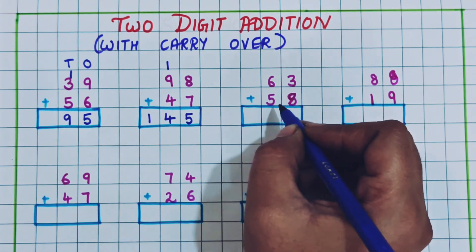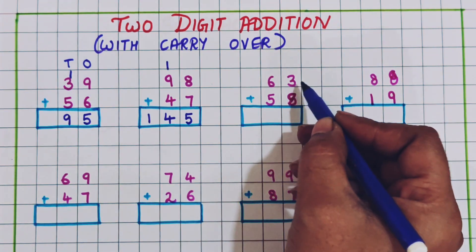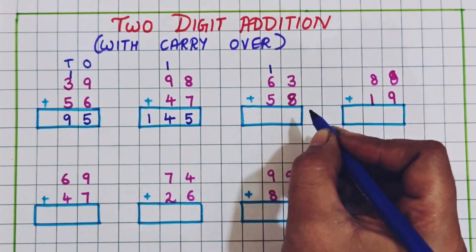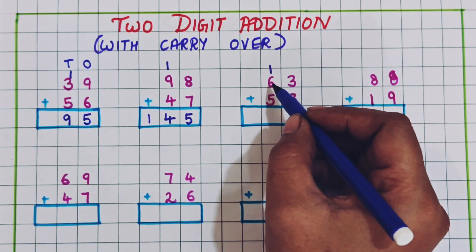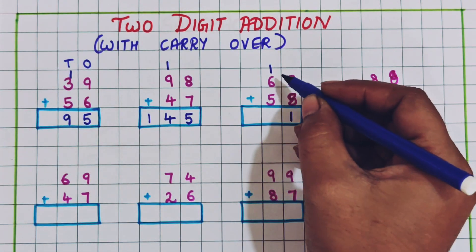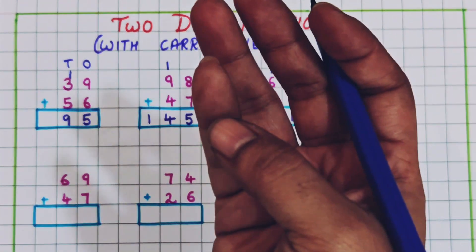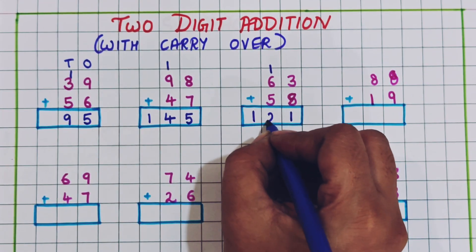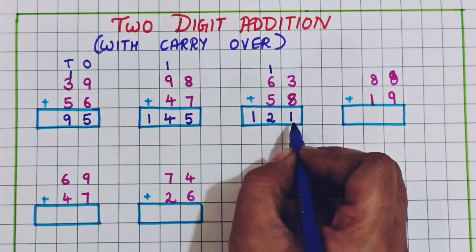Now 63 plus 58. I will keep 8 in my mind and add 3: 9, 10, 11. So 1 I will write here as a carryover and 1 at the bottom. Now 6 plus 1 is 7, and 7 plus 5: 8, 9, 10, 11, 12. So I will write 12 here. The answer is 121.